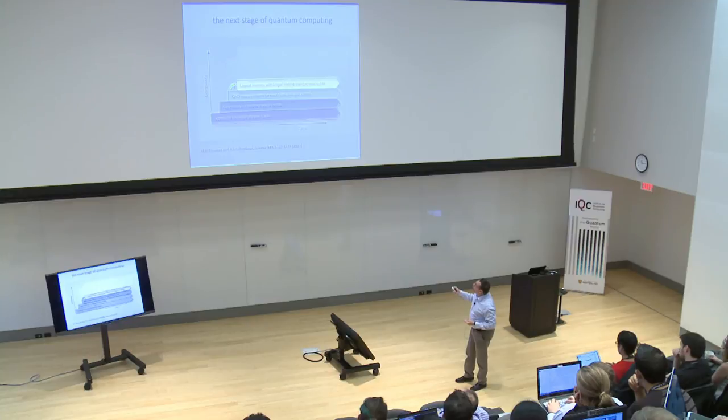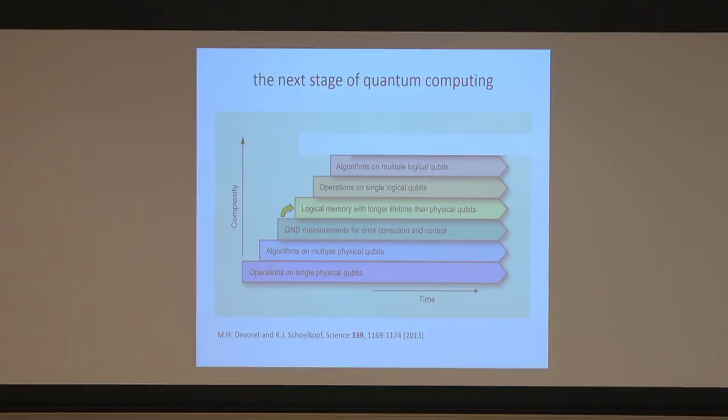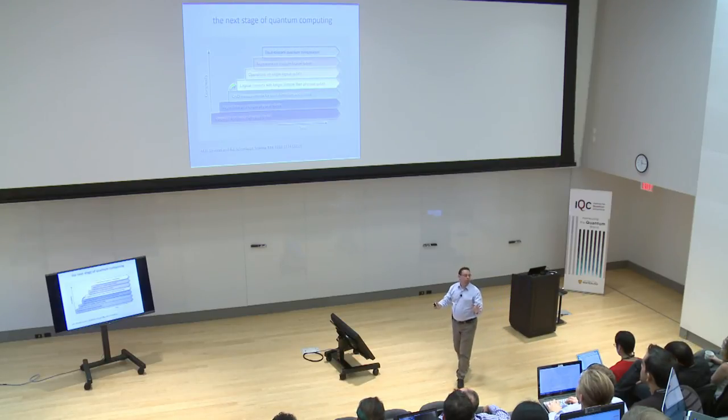The task we are attempting to realize in the next four or five years is to show we can make a logical qubit with an error rate one or two orders of magnitude better than the error rates of the physical qubits that make up that logical qubit. A quantum memory per se is not ultimately useful; it is just a stage to demonstrate quantum error correction. After that, we need to make logical qubits interact with each other, which is a relatively hard task, and eventually perform a full fault-tolerant quantum computer.